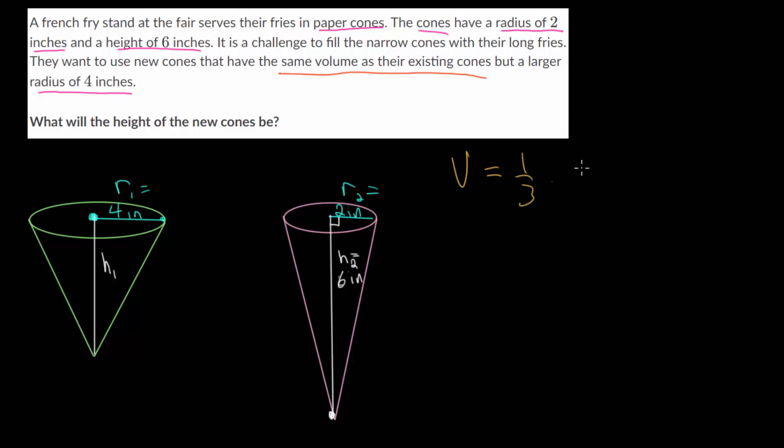It's one-third of the area of the base, which, since it's a circle, will be π multiplied by the radius squared, and then multiplied by the height. Let's figure out the volume of this original cone, and we'll use that to figure out the height of our new cone.